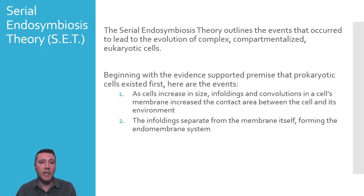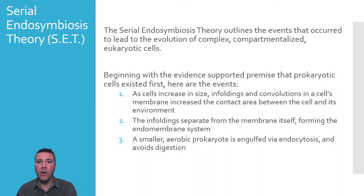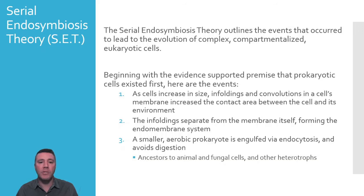Having a separate, protected location in which a cell could store its genetic information would surely have been advantageous. The next two steps of SET focus on the origins of two organelles in particular: the mitochondrion and the chloroplast. The origin of the mitochondrion begins when a smaller, oxygen-utilizing prokaryote is engulfed by a larger cell — perhaps as prey — but ends up avoiding digestion. This newly formed relationship would be beneficial for both organisms: the larger host cell can take advantage of energy-rich molecules produced by the aerobic prokaryote, and the smaller symbiont has the benefit of a stable, protected environment with plenty of raw materials. This newly formed cell is representative of the ancestors to animal and fungal cells, as well as other heterotrophic organisms.